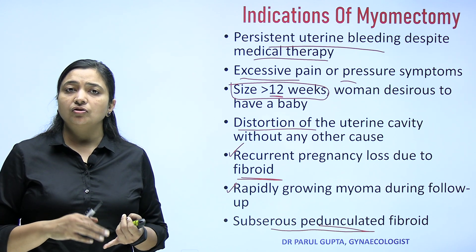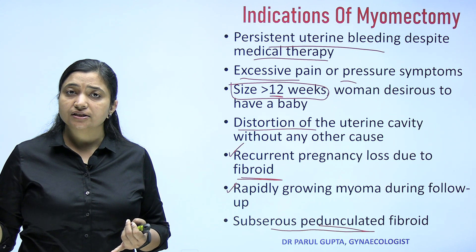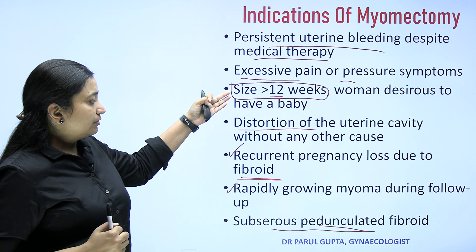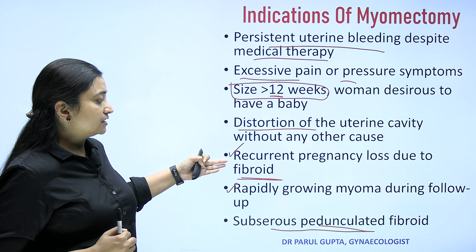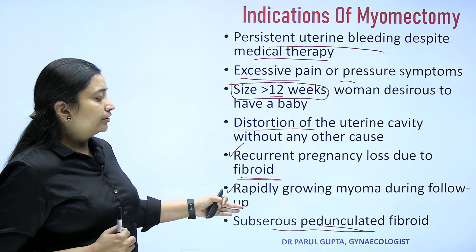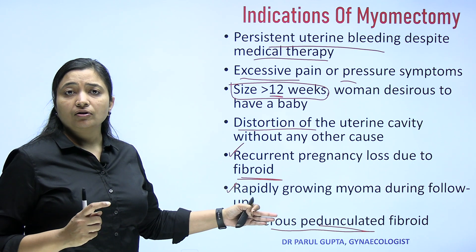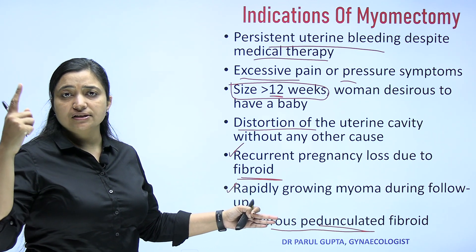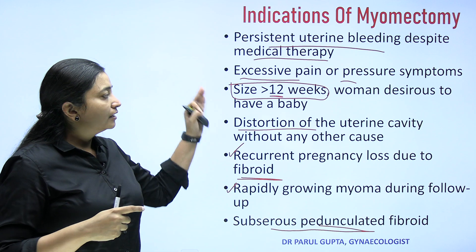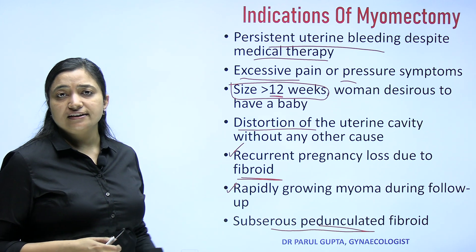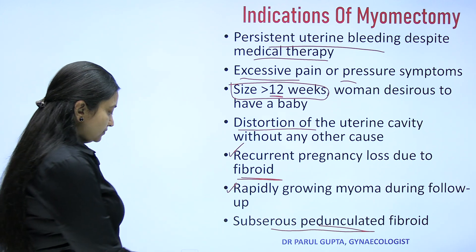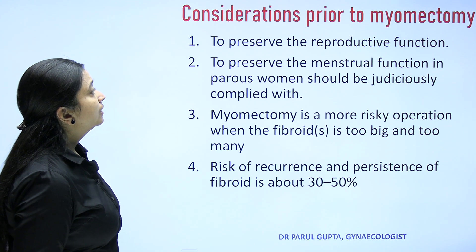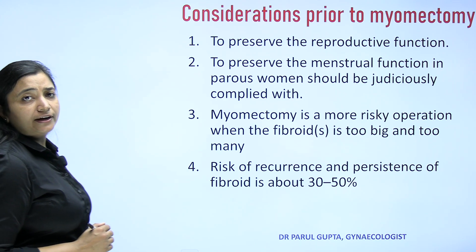Any subserous pedunculated fibroid needs to be removed before it undergoes torsion or secondary changes. If the size is more than 12 weeks, there is recurrent pregnancy loss, or during follow-up the fibroid is increasing in size every six months, remove it before it creates further problems.